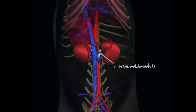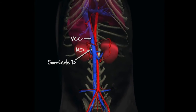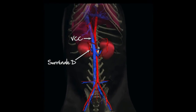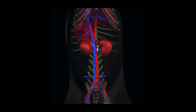Ventralement, la surrénale gauche est traversée par la veine phrénicoabdominale gauche qui la divise en deux lobes. La surrénale droite est quant à elle un peu plus crâniale et dorsale, située médialement et dorsalement au rein droit et tout juste latéralement et dorsalement à la veine cave caudale.